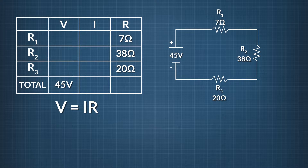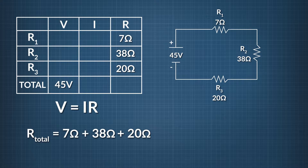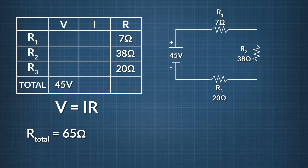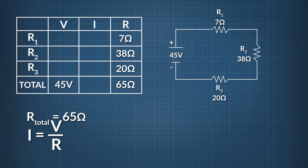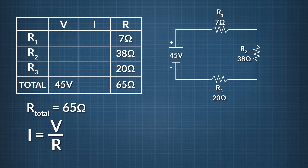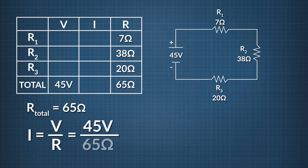Since we're working with a series circuit, we find the total resistance by adding up each individual resistor: 7 ohms plus 38 ohms plus 20 ohms equals 65 ohms. We fill in the blank for total resistance with 65 ohms. Next, we can solve for total current. We rearrange Ohm's Law so that current equals voltage divided by resistance. 45 volts divided by 65 ohms gives us 0.69 amps of current. We fill that blank in on the chart.